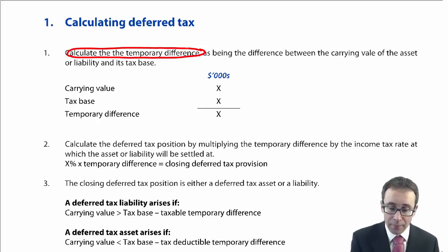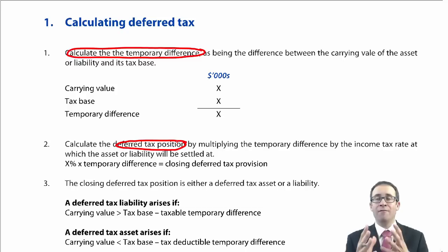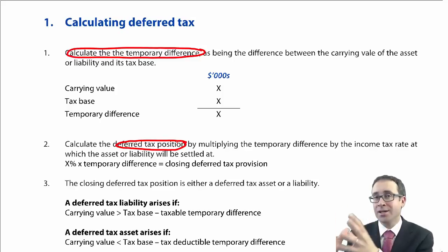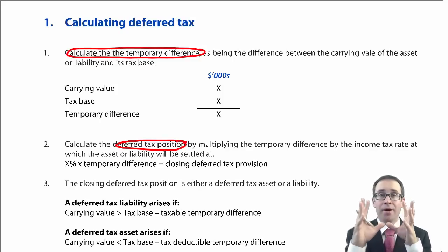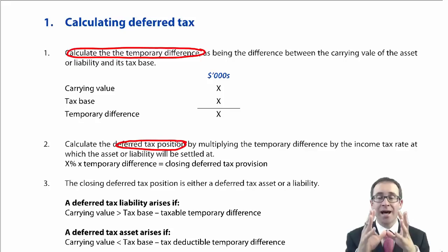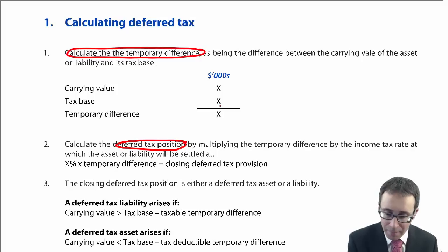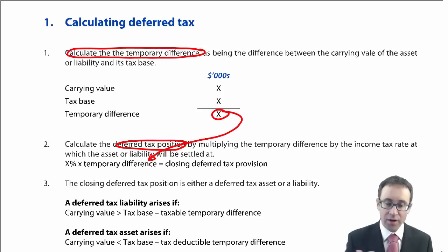Once you've worked out your temporary difference, you then work out your deferred tax position. Under IFRS, everything is position focused — we work out a tax expense in profit or loss by focusing on the tax assets and liabilities. To work out the deferred tax position, you take the temporary difference and multiply it by the tax rate.